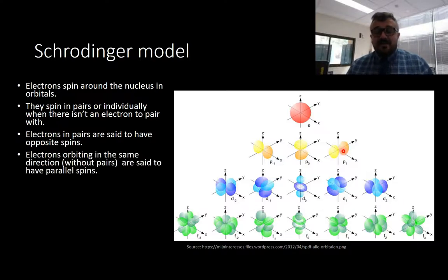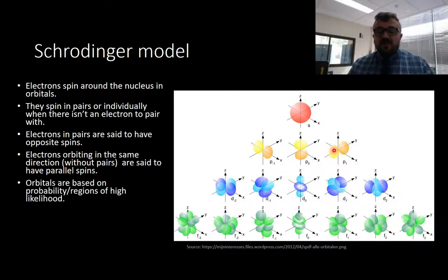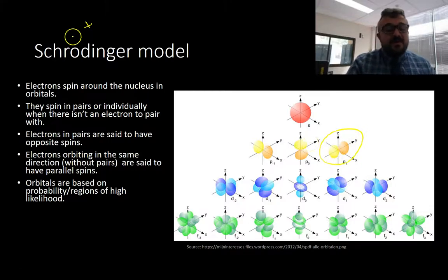Electrons orbit in the same direction when they're not in pairs. If we've got one orbital spinning around this way, the other will be spinning the same direction, and we call those parallel spins. Orbitals are based on probability. We no longer say that an electron is here at point X. We say that the electron is most likely to be at point X or in this orbital. The further out, the lower the probability becomes.